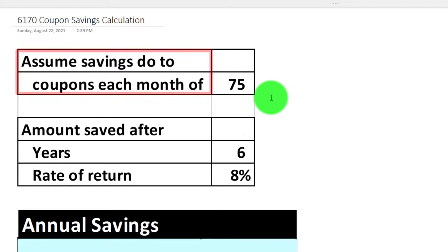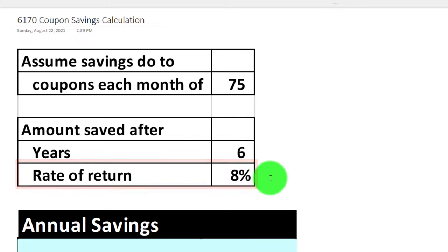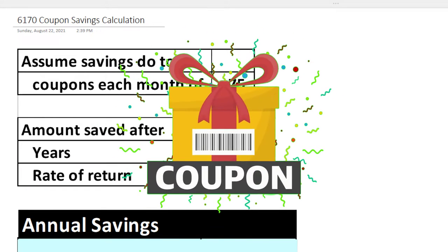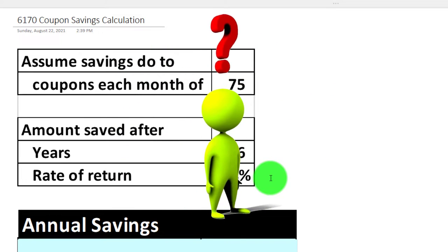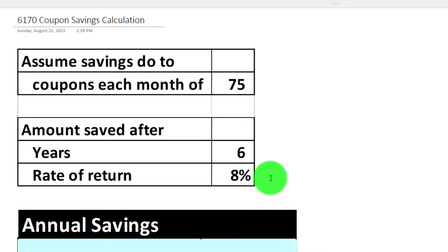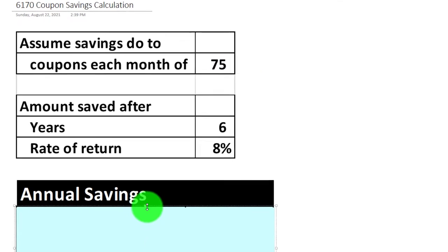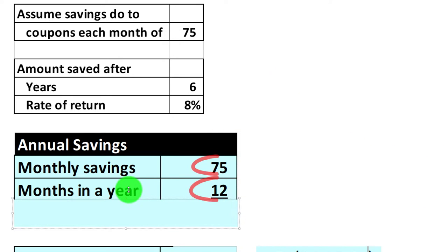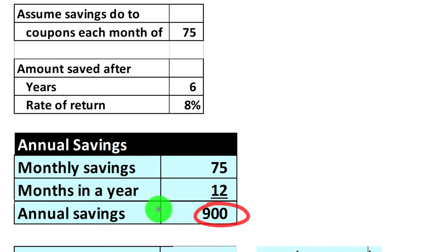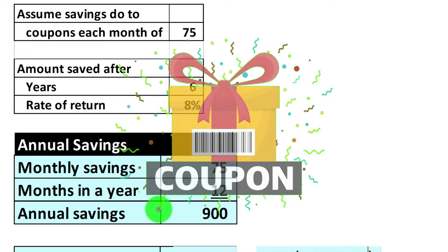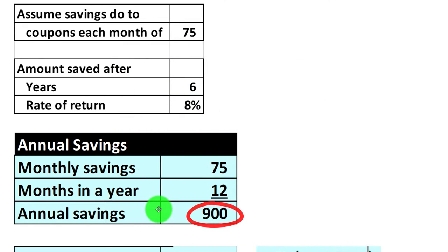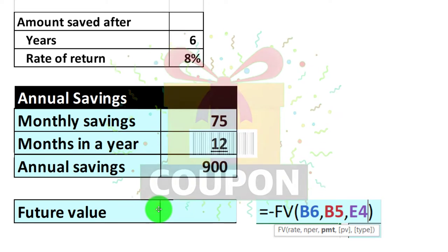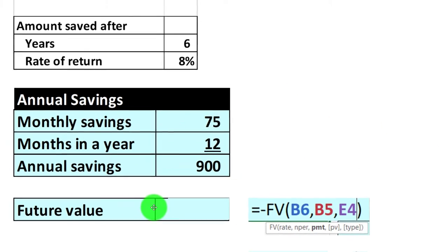We're going to assume the savings due to coupons each month are $75. So the amount saved after six years at a rate of 8% — if you saved $75 with the use of coupons, what would your future value be earning 8% on that $75? A quick calculation: 75 times 12 gives us $900 saved per year with coupons. We can compare the $900 versus the time put in to save $75 a month.